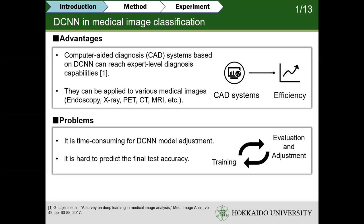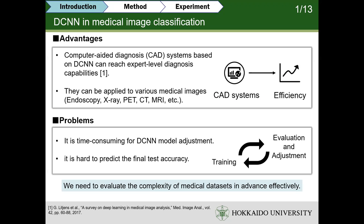However, there are still some problems that exist in medical image classification based on the CNN. First, it is time-consuming to train a good CNN model because of the repeated training process. Second, because of the uncertainty of the CNN models, it is hard to predict the final task accuracy. So, we need to evaluate the complexity of medical data sites in advance effectively.